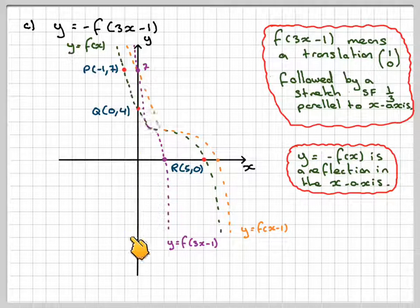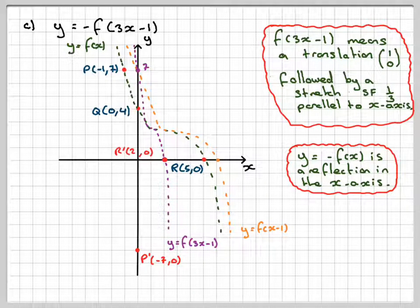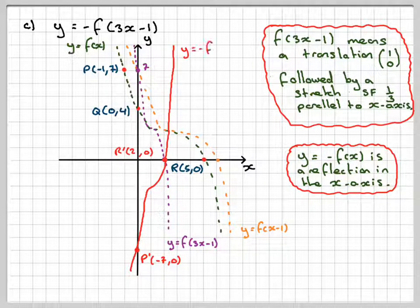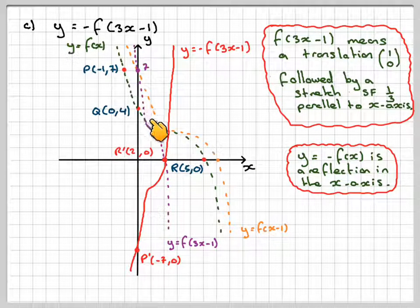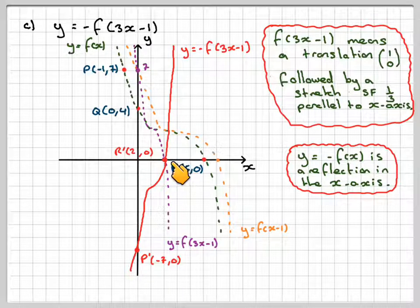We need to mark on this point here, down here. So we need to mark on the point minus 7, 0, and this point, which we already know to be 2, 0, and then we just reflect the purple graph, this purple graph here, in the x-axis.